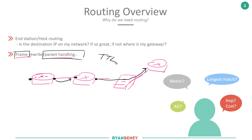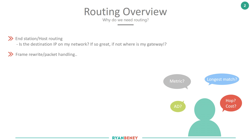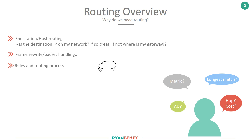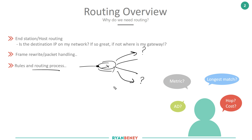Why does the TTL have to decrement? Why do I have to create a new CRC on the trailer of the layer 2 frame? And why does the routing pass a packet to one interface over another, and why might that decision be made? For example, if I have two interfaces and I receive a packet on one particular interface, do I go this way or do I go that way? How does that routing process work, and what are the rules and limitations around achieving routing?